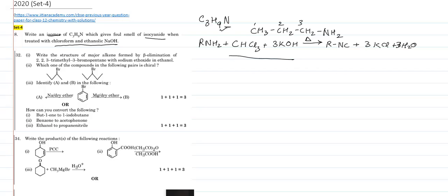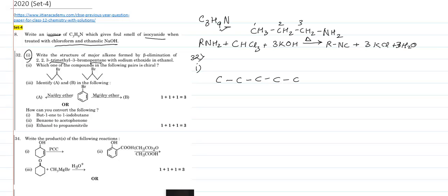That's all for question 8. The next question is number 32, part one: write the structure of the major alkene formed by beta elimination of 2,2,3-trimethyl-3-bromopentane with sodium ethoxide in ethanol. When I first saw this name I wasn't sure what to do, so my suggestion is to first draw the structure. It's a pentane, so it has five carbon atoms: one, two, three, four, five.